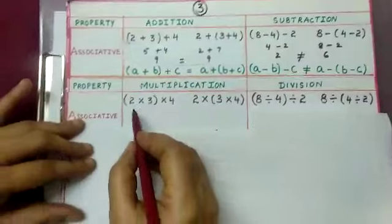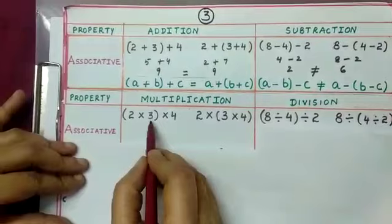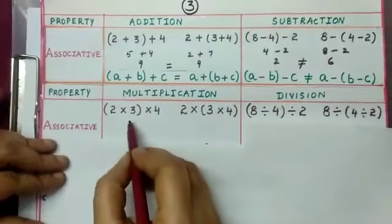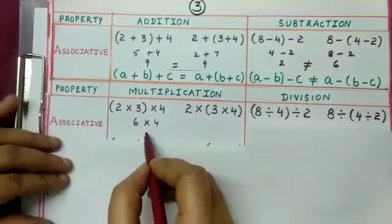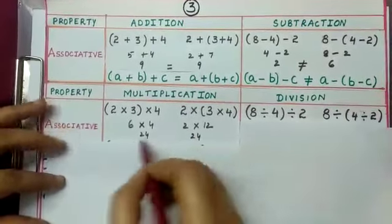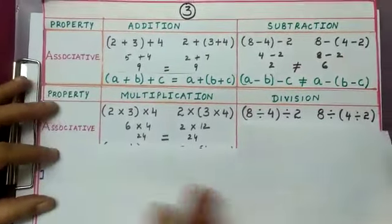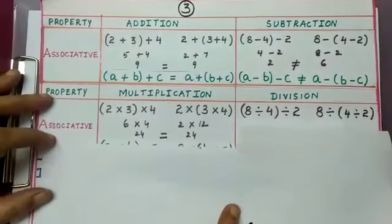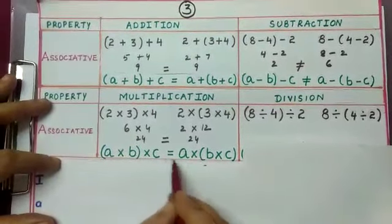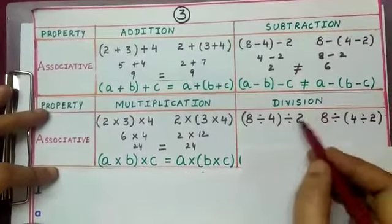Let us check associativity under multiplication: (2 into 3) into 4 versus 2 into (3 into 4). First: 2 threes are 6, and 6 fours are 24. Second: 3 fours are 12, and 2 twelves are 24. Since 24 equals 24, integers are associative under multiplication. In general, for any three integers a, b, and c, (a into b) into c is equal to a into (b into c).